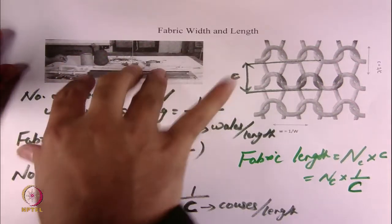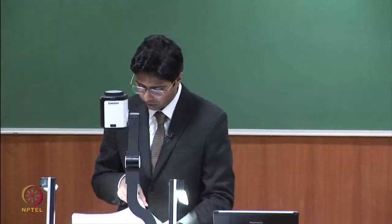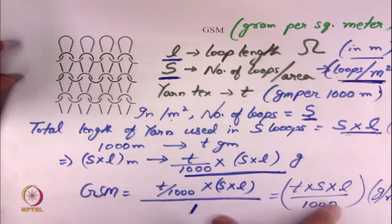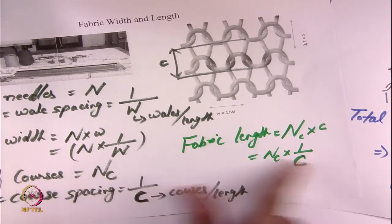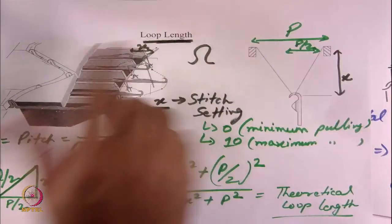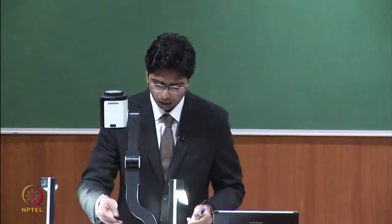So you can see that everywhere, if you understand the machine parameters and know a few variables, you can find out the GSM theoretically, which is related to these relationships. You can also find out fabric width and length. All the structural parameters — loop length, fabric width and length, and GSM — can be calculated. Let's now solve a very simple example and then finish this lecture.